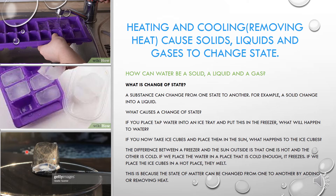The ice is turning from solid ice into liquid. But in the freezer, it turned from liquid to solid ice. This is because the state of matter can be changed from one to another by adding or removing heat. Adding heat is when you put your ice outside and let the sun warm it up — that's how we change from a solid to a liquid. Removing heat would be taking room-temperature water into a cold fridge, removing heat from that liquid and turning it to ice.